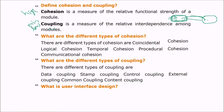What are the different types of cohesion and coupling? Types of cohesion are: coincidental, logical, temporal, procedural, and communication cohesion. Types of coupling are: data coupling, stamp coupling, control coupling, external coupling, common coupling, and content coupling.